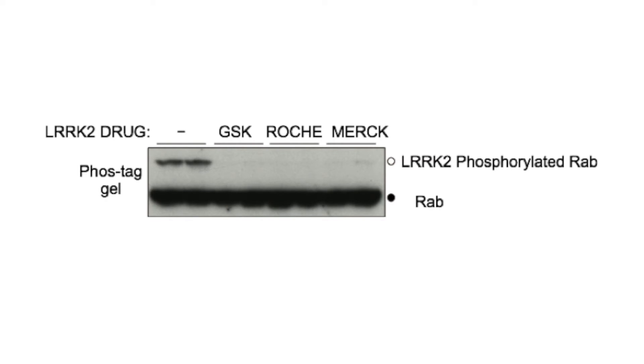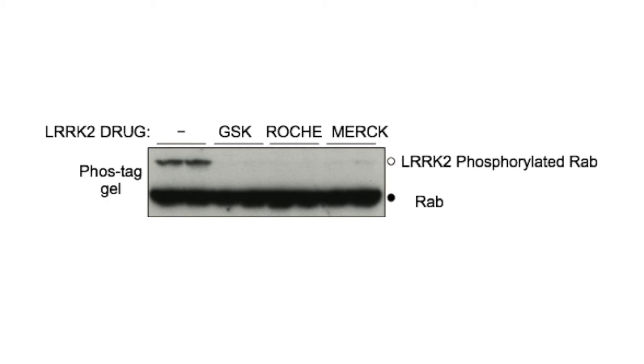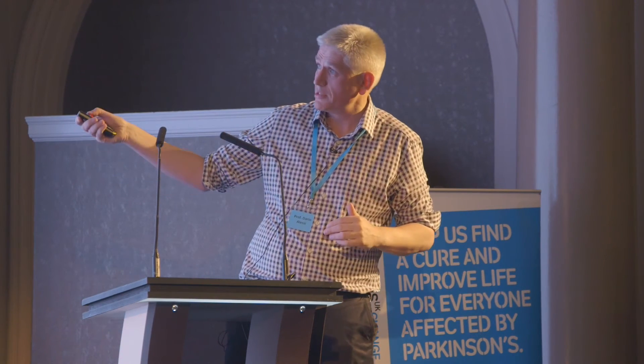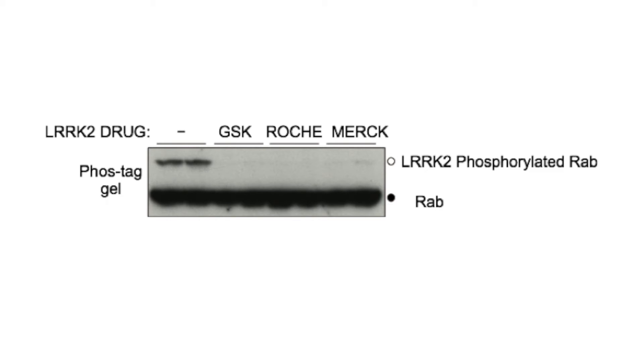These are the data that I look at every day in the lab that I find terribly exciting. Using our methodology to study RAB phosphorylation in cells, we can separate the LRRK2-phosphorylated RAB on a gel. You can see the active phosphorylated form in a skin cell from a patient, and the inhibited form. We've taken three different drugs from three different companies — GSK, Roche, and Merck — that target LRRK2, added them to cells, and you can see that this inhibits LRRK2, inhibits RAB phosphorylation, and the band disappears.